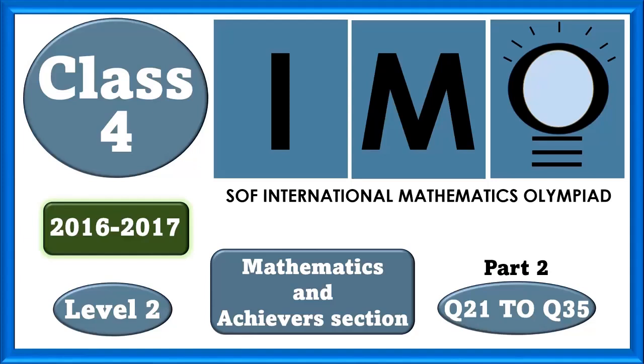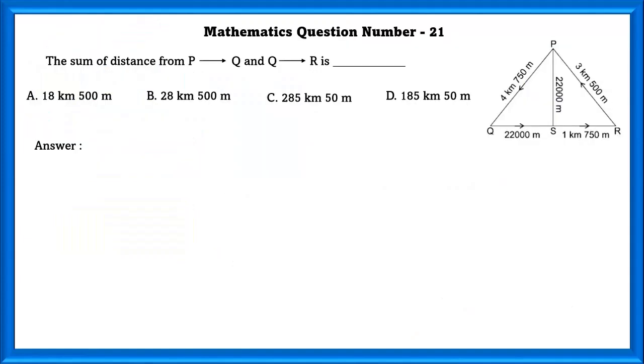Class 4 IMO Level 2, Mathematics question number 21. The sum of distance from P to Q and then Q to R is dash.